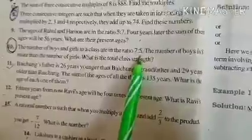Now one more question. The number of boys and girls in a class are in the ratio 7:5. The number of boys is 8 more than the number of girls. What is the total class strength?